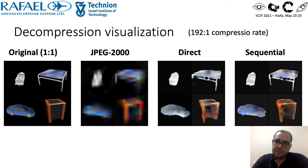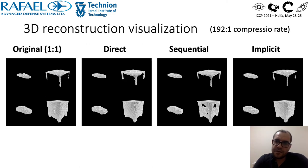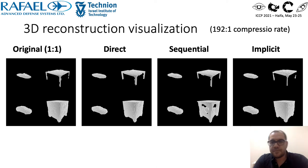Here is an example of 4 decompressed images at high compression rate. We can see that JPEG 2000 has visibly lower image quality compared to both sequential and direct models. Here is a 3D reconstruction from 5 views for all methods including the implicit model. All methods recover the 3D structure reasonably well. In this particular case, the sequential model suffers from some artifacts in the bottom right object.